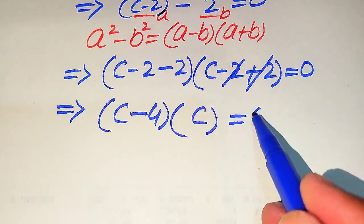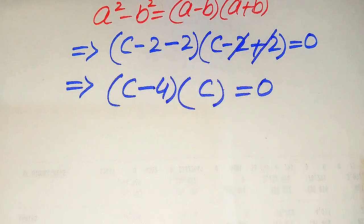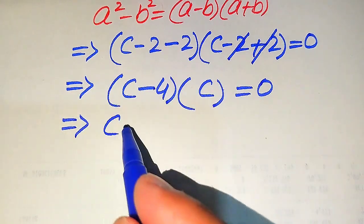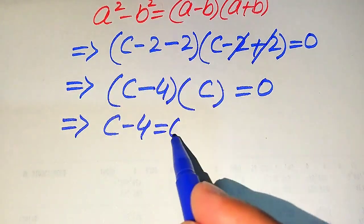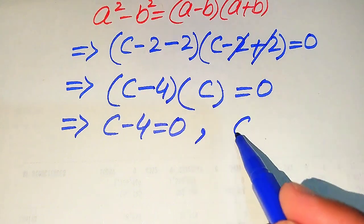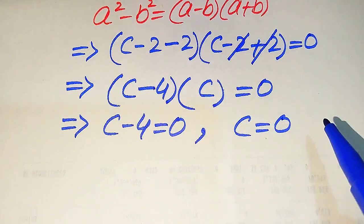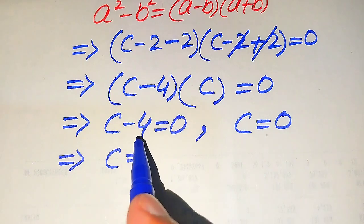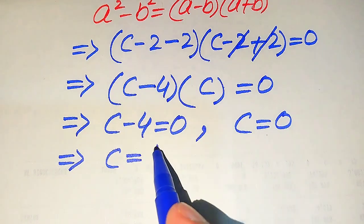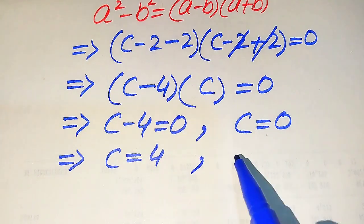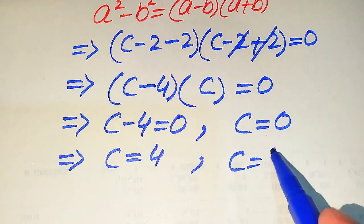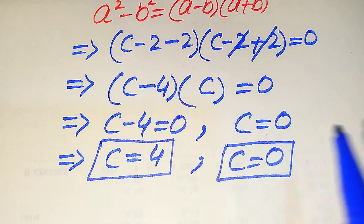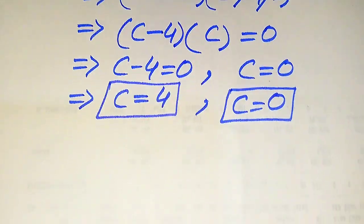Simplifying: c minus 4, times c equals 0. We break this into two cases. Case 1: c minus 4 equals 0, giving c equals 4. Case 2: c equals 0. So these are the two roots of the given equation obtained from the first method.